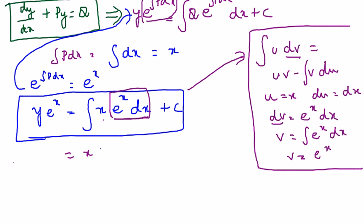So you know that u equals x, v equals e^x minus integral of v which is e^x dx plus c. So after substituting the formula you get.